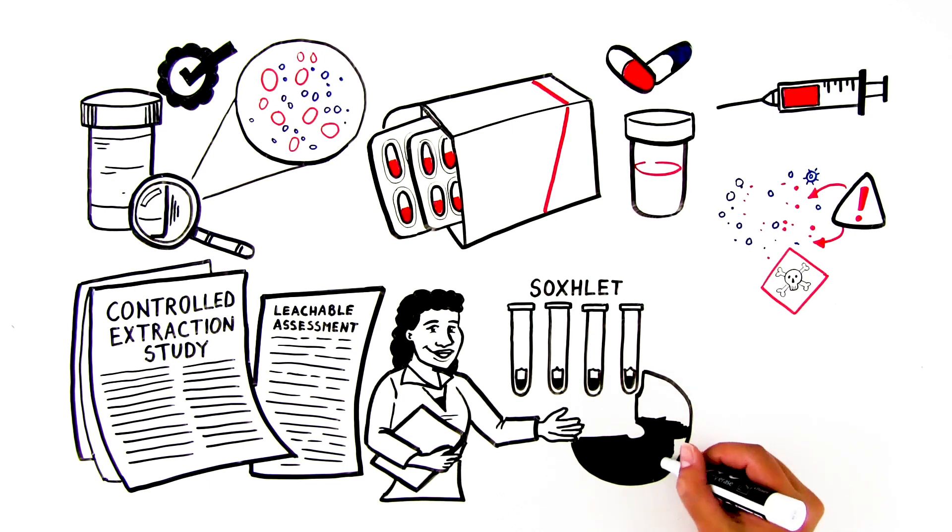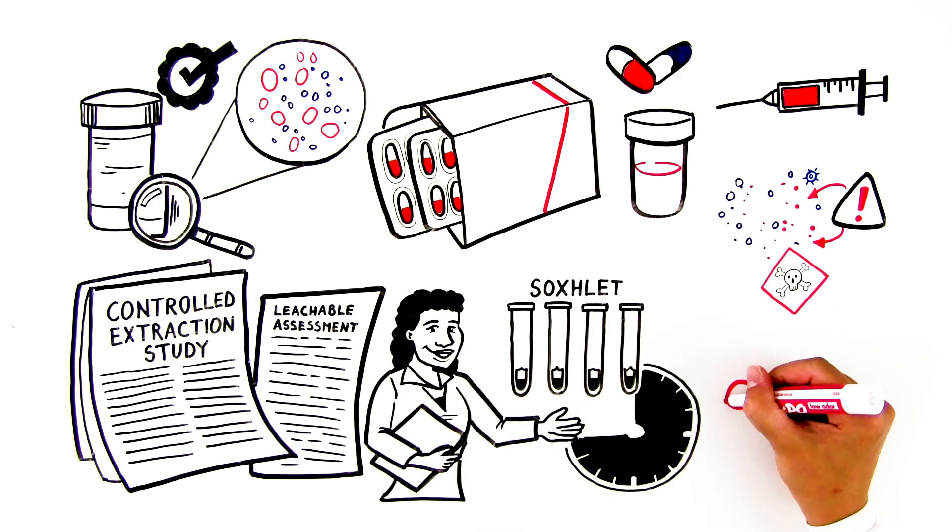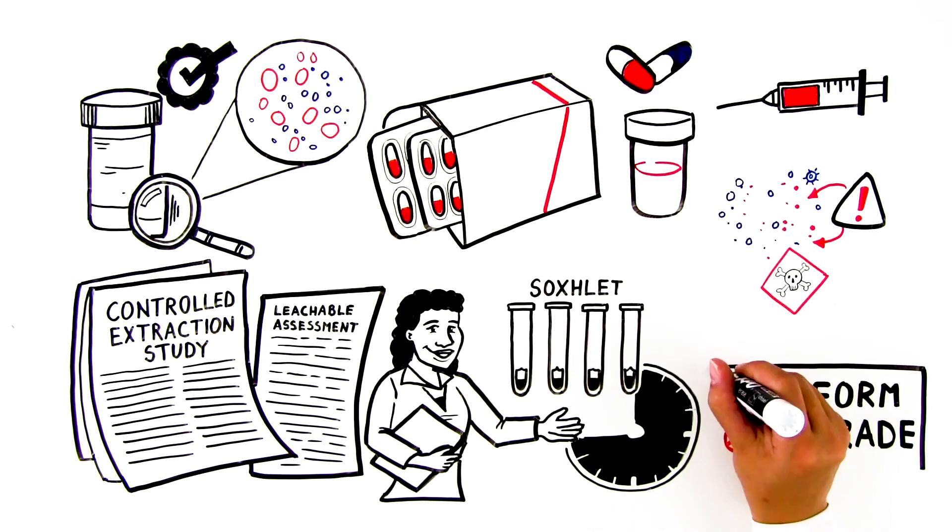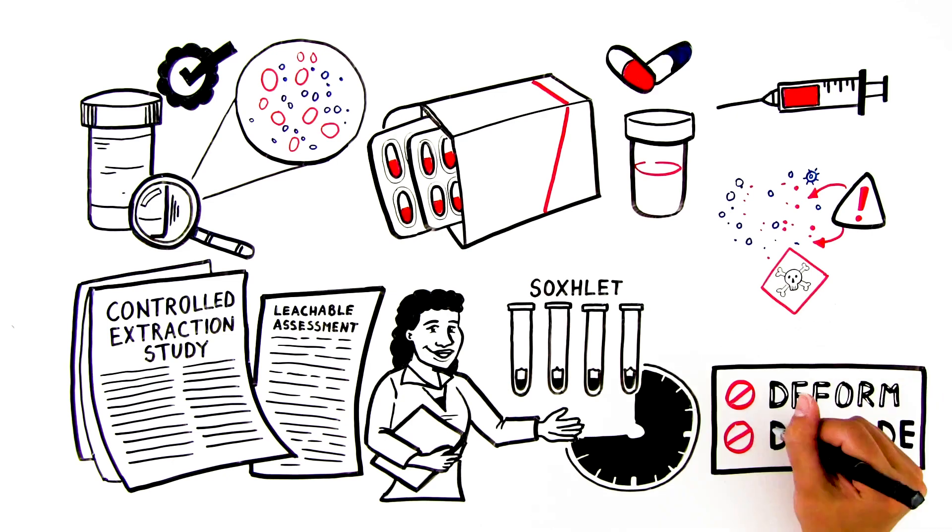Soxhlet and reflux are both time-consuming manual processes at risk of cross-contamination. Also important to note is that the extraction conditions should not be so harsh as to deform or degrade the material of interest, which would affect the extractable profile.